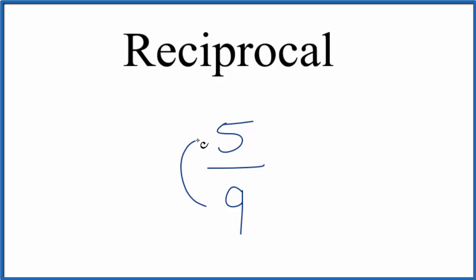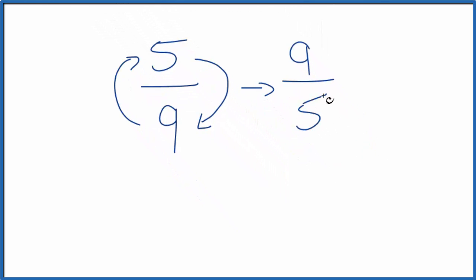And to do that, we can put the numerator on the top and the denominator on the bottom. So they're just switching places. And that gives us nine over five as the reciprocal for five ninths.